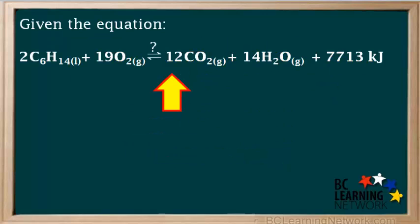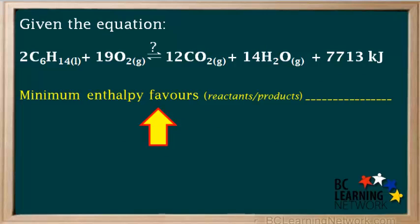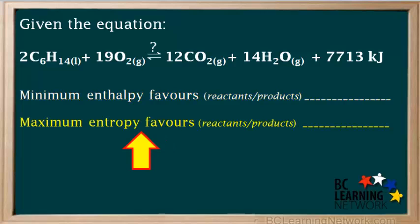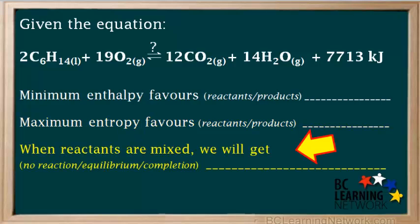Given this equation, we're asked whether the tendency toward minimum enthalpy favors reactants or products, whether the tendency toward maximum entropy favors reactants or products, and when reactants are mixed, will we get no reaction, equilibrium, or completion. You may have noticed this question mark above the double arrow in the equation — it means we haven't determined yet whether an equilibrium is established or whether the reaction goes to completion. If it's equilibrium we keep the double arrow; if it's completion we'll replace it with a single one.